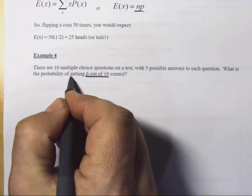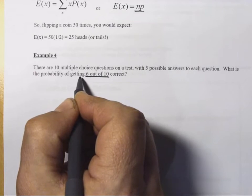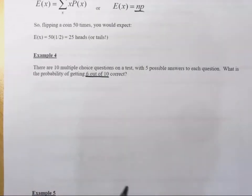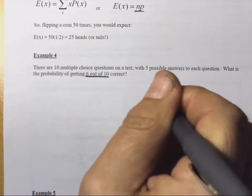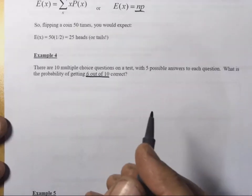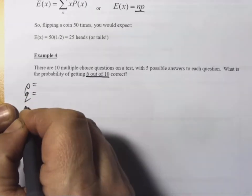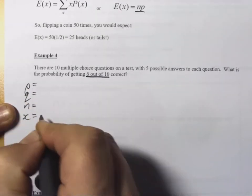Now, we have to assume that getting means guessing. We don't have any prior knowledge here. We're guessing 6 out of 10 correct. We're closing our eyes and saying, Alright, I think it's B, or I think it's D. And they just guess completely for each question. Alright, let's set this up. P, Q, N, and X.